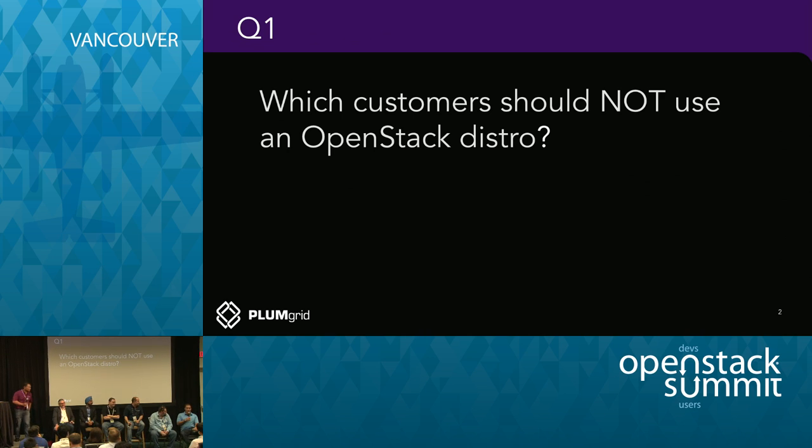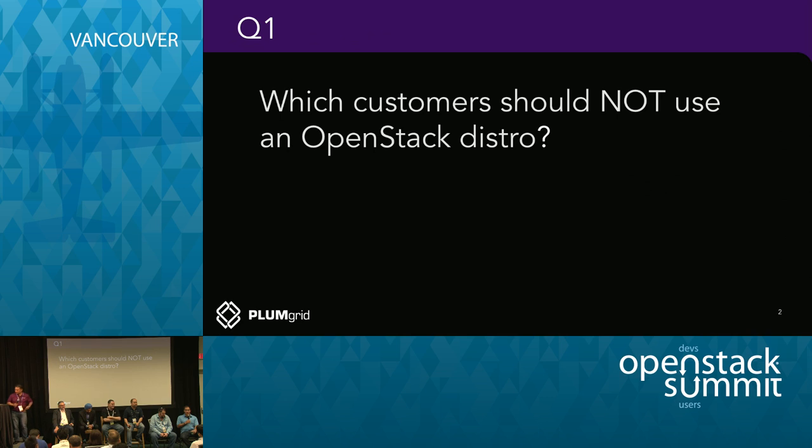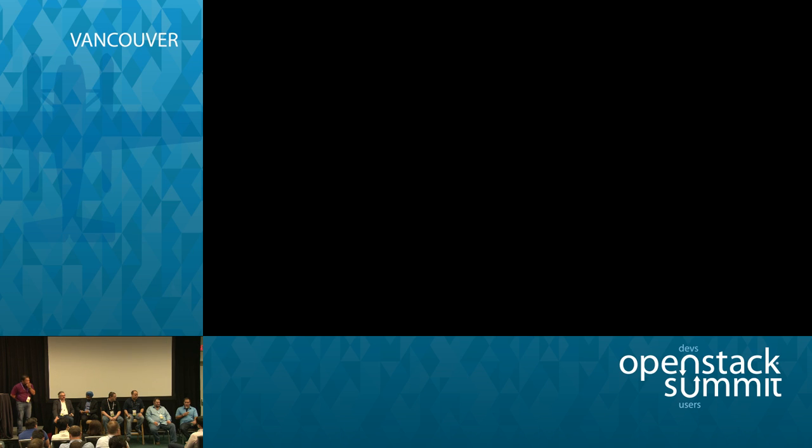Customers that don't know what their workload is should not even start down this path. That's the most common experience with customers that come to us. Red Hat is a systems integrator — a trusted advisor to help them find the right solution for their problem. If you don't know what problem you're trying to solve with OpenStack, you shouldn't start building a cloud, because you can't make informed decisions about which distribution to pick or which of the six million configuration options to set.